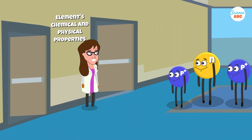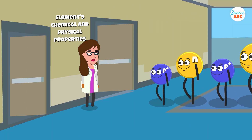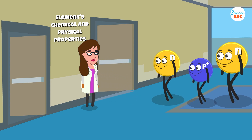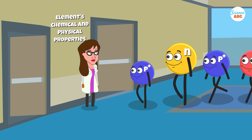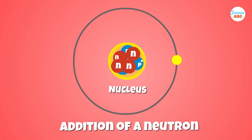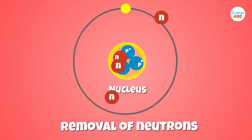An atom's chemical and physical properties are determined by the number of protons and neutrons in its nucleus. When you create an isotope by adding or removing neutrons, it will have different properties than the parent nucleus.